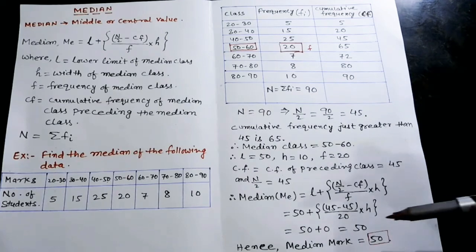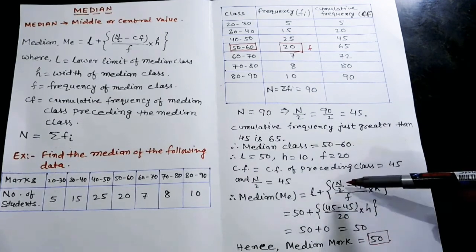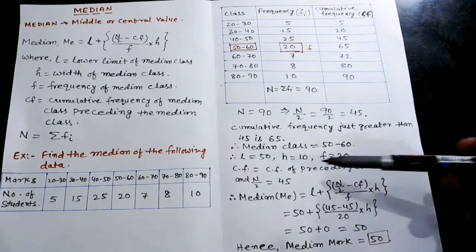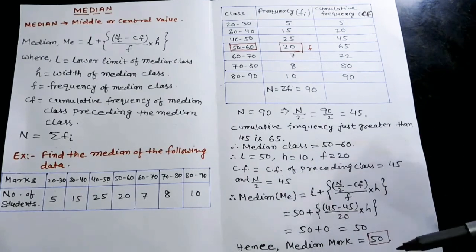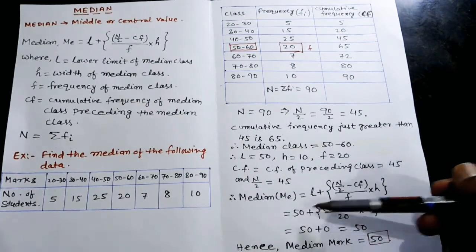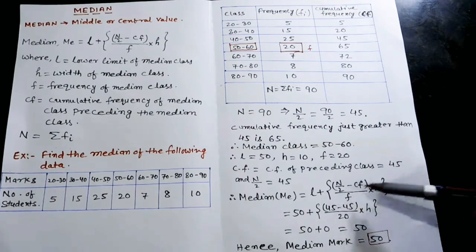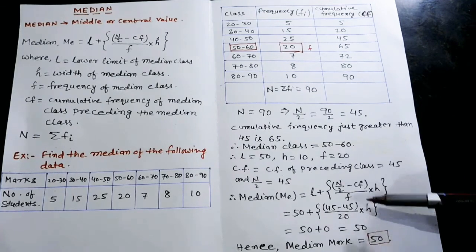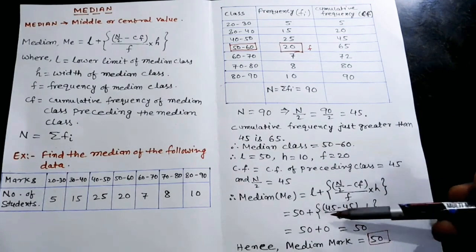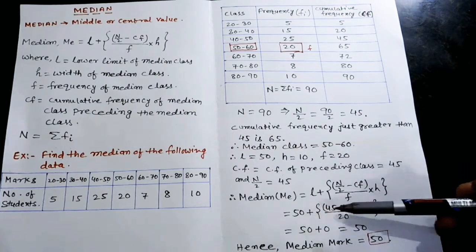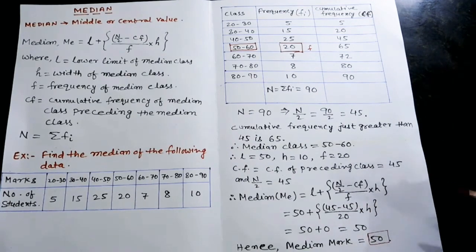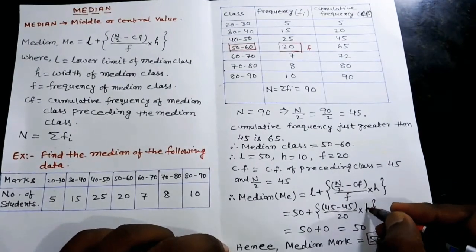The median formula is ME = L + (N/2 − CF) / F × H. Substituting the values: ME = 50 + (45 − 45) / 20 × 10. This gives us 50 + (45 − 45) / 20 × 10.